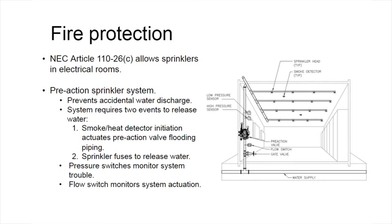In electrical rooms, we typically use pre-action type sprinkler systems. The sprinkler piping within the room is dry. Two events must occur before water is released: first, either a smoke or heat detector initiates the pre-action valve, which floods the system; then the sprinkler must fuse from the heat of the fire before water is released. Pressure switches monitor for trouble and flow switches monitor for system actuation. This is important because during construction or modifications, a conduit could hit a sprinkler head. With a pre-action system, that accidental hit would not result in water discharge onto the equipment.